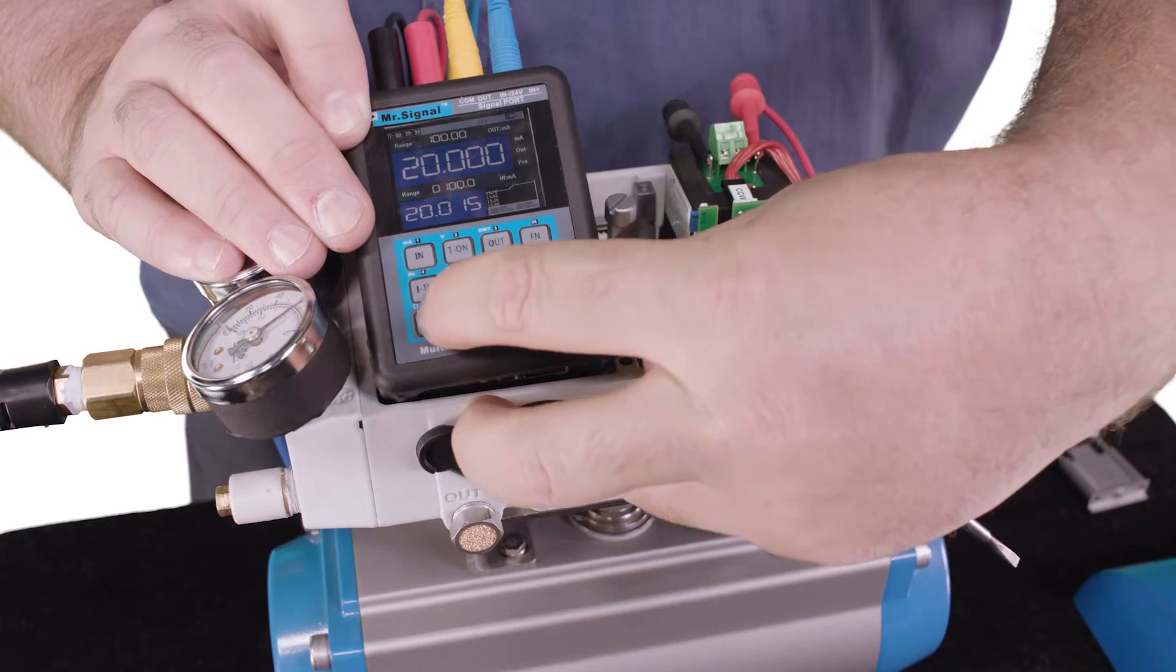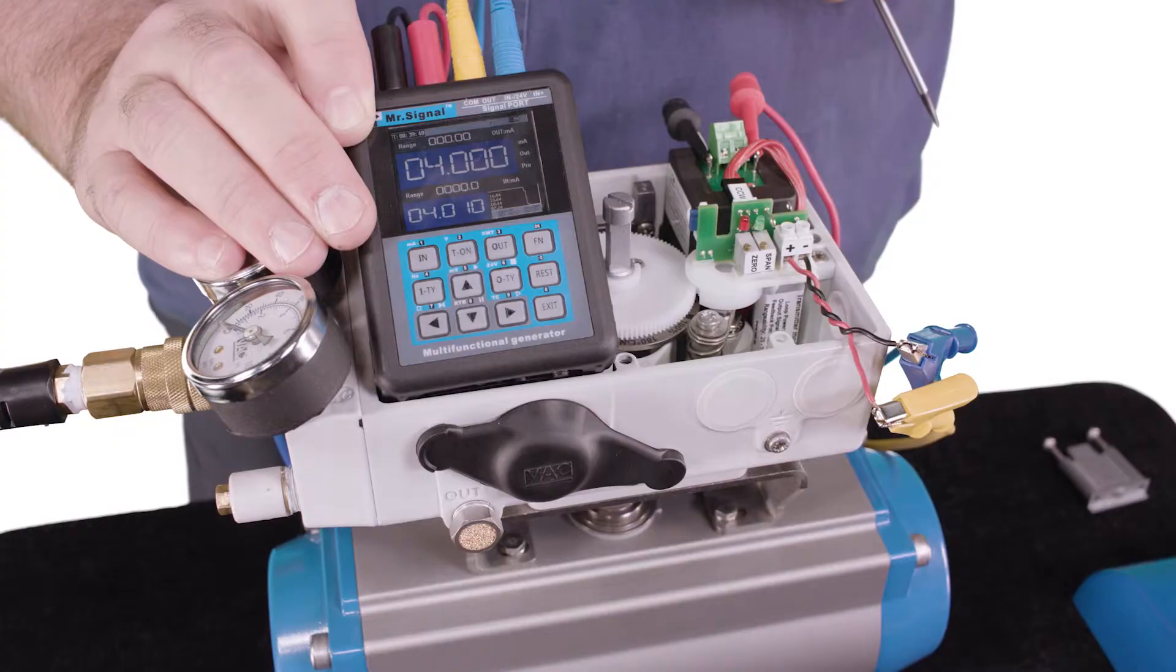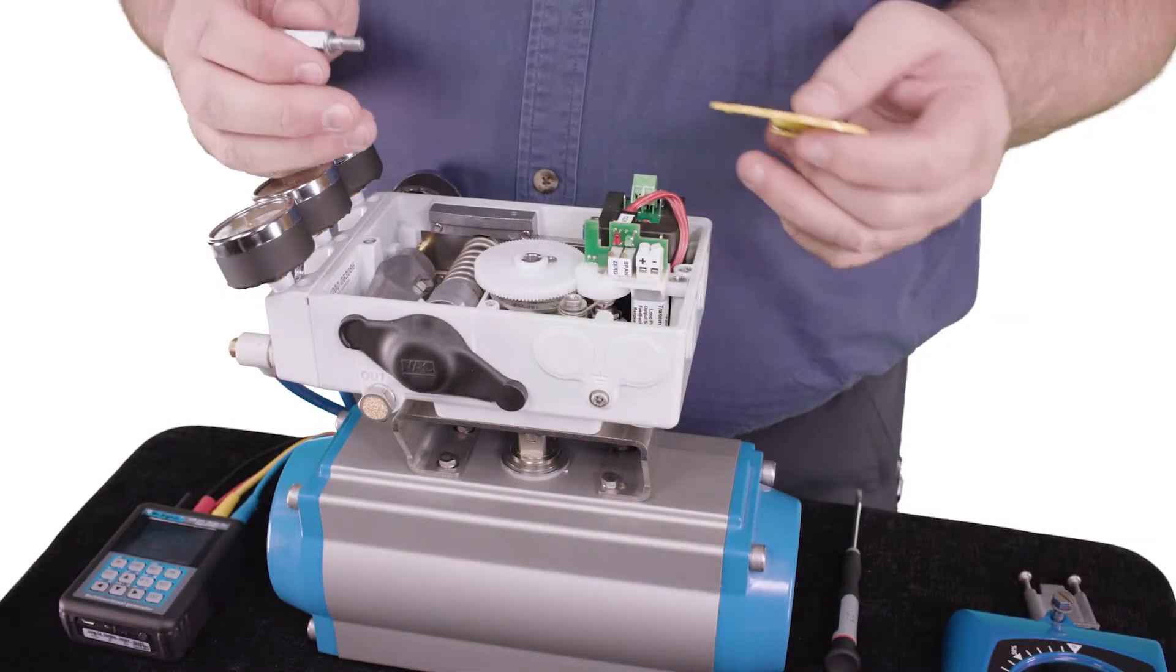Then we're going to reduce the signal on the valve to 4 milliamps and confirm that our feedback still reads 4 milliamps. Calibration is complete.